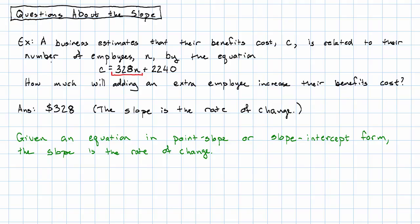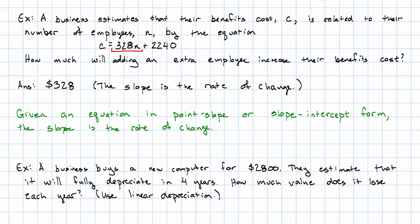Sometimes we're given the setup for a problem, and we can calculate the slope without writing down the equation. For example, suppose that a business buys a new computer for $2,800, and they estimate that it will fully depreciate in four years. How much value does it lose each year?